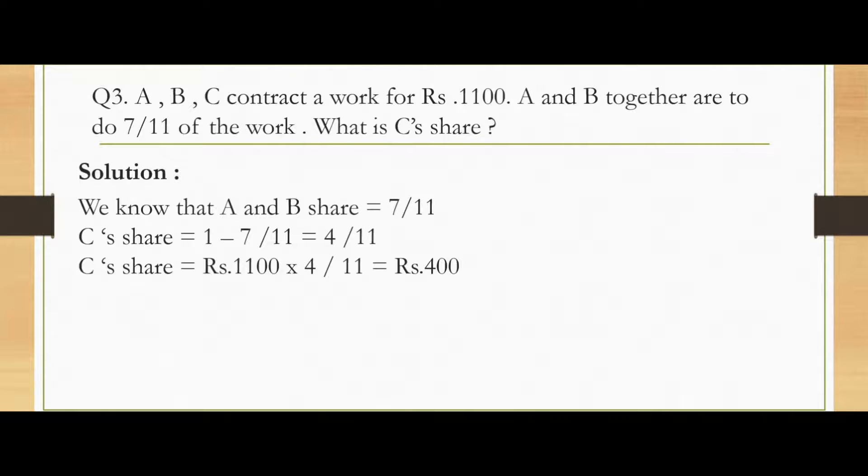We know that A and B share together is 7 by 11. So C's share will be 1 minus 7 by 11, which comes to 4 by 11. So C's share in the total of Rs.1100 will be Rs.1100 into 4 by 11 which will come to Rs.400.